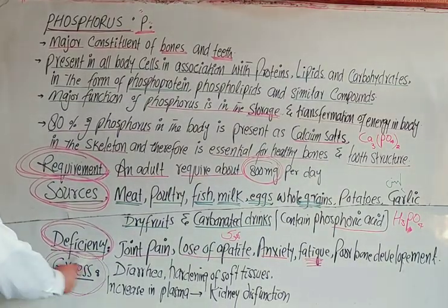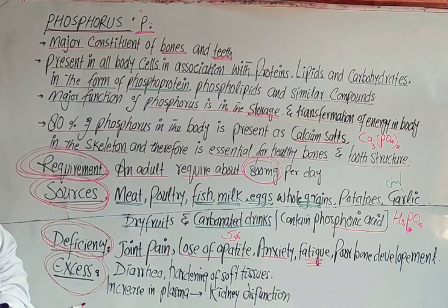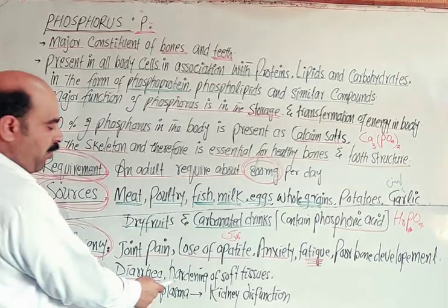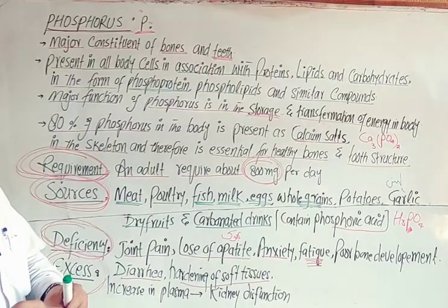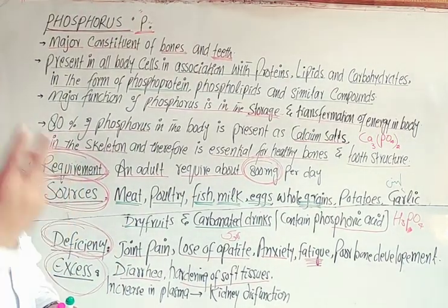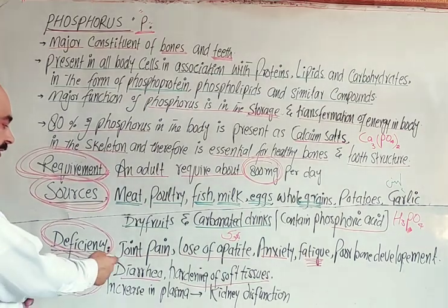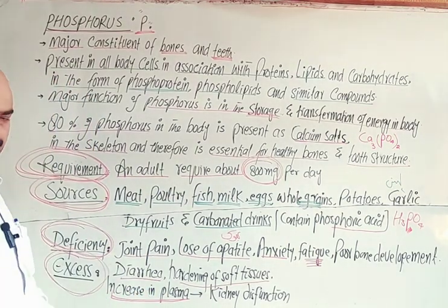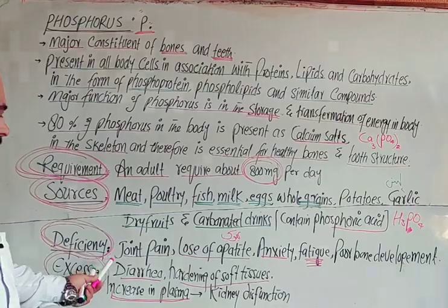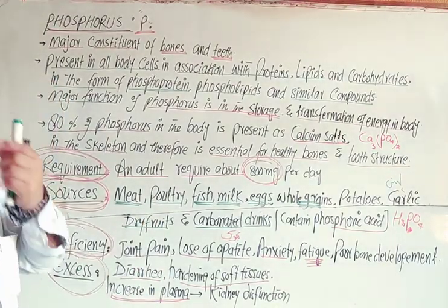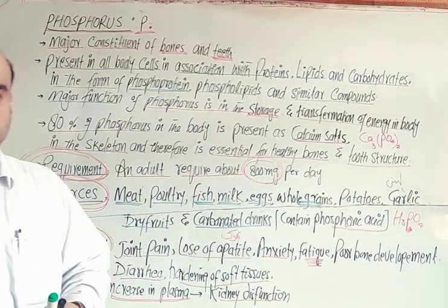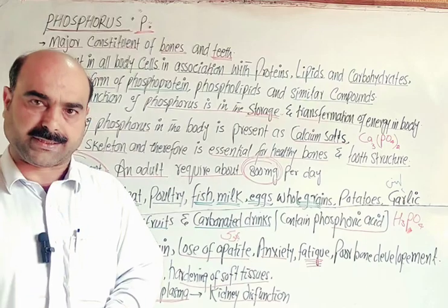When phosphorus is in excess in the body and its level increases in blood plasma beyond normal, it can cause hardening of soft tissues and organs. Excess phosphorus also affects excretion levels and can lead to kidney dysfunction, potentially requiring the patient to undergo dialysis.